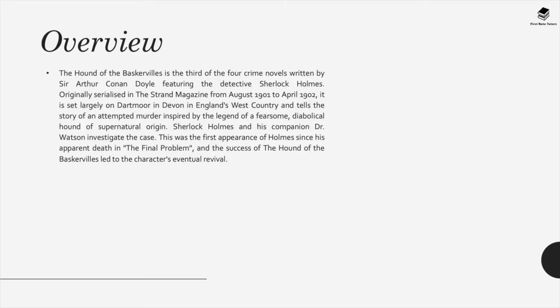The Hound of the Baskervilles is the third of the four crime novels written by Sir Arthur Conan Doyle featuring the detective Sherlock Holmes. Originally serialized in the Strand magazine from August 1901 to April 1902, it is set largely on Dartmoor in Devon in England's West Country, and tells the story of an attempted murder inspired by the legend of a fearsome, diabolical hound of supernatural origin. This was the first appearance of Holmes since his apparent death in The Final Problem, and the success of The Hound of the Baskervilles led to the character's eventual revival.